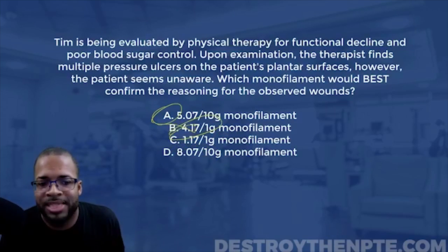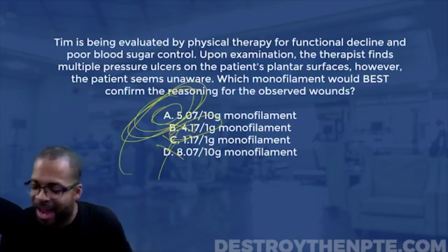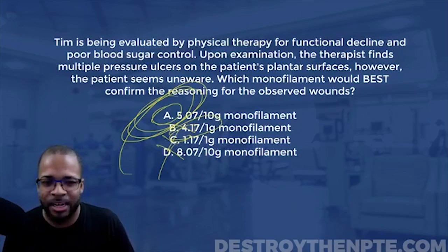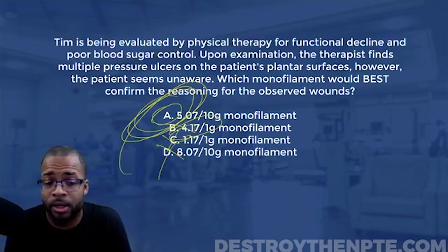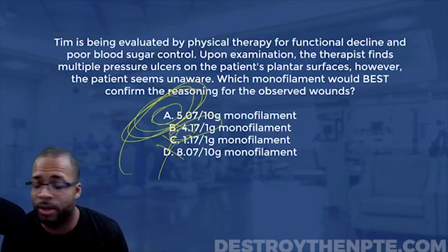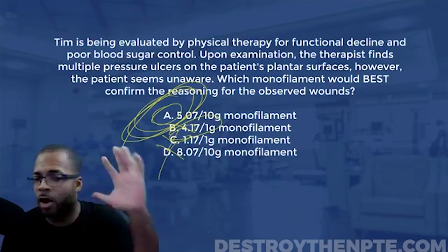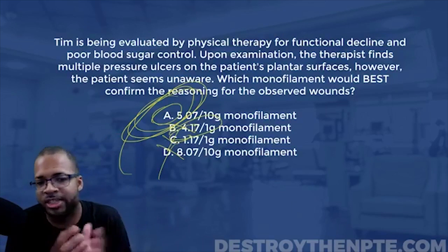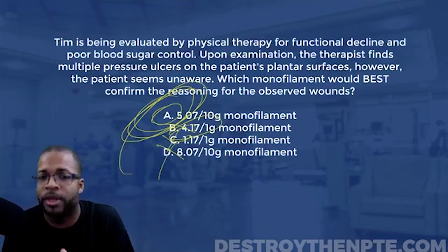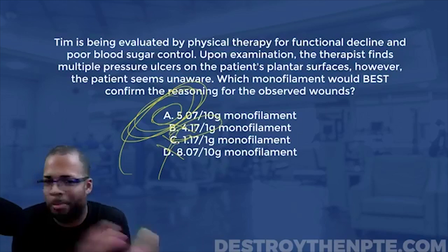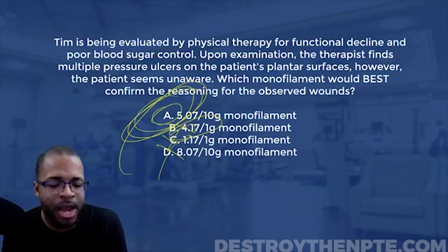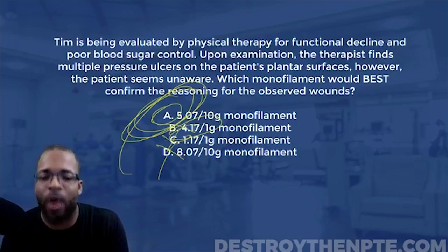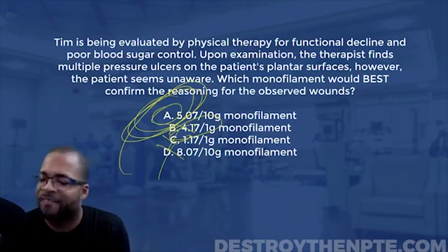C and D are both untrue, leaving us with the final answer: A. One important exam tip — these numbers can be presented differently. The exam may say '10 gram' or '1 gram' without giving you the 5.07 or 4.17 values. You need to know these numbers backwards and forwards to apply them correctly on the NPTE. If you got this right with the correct rationale, that's what matters.